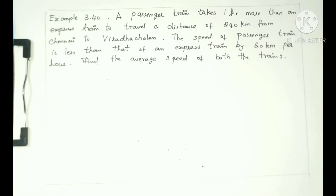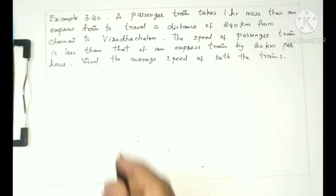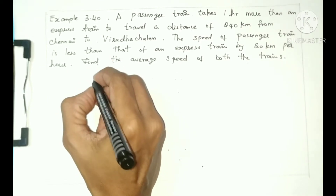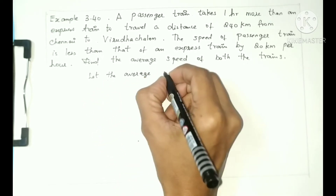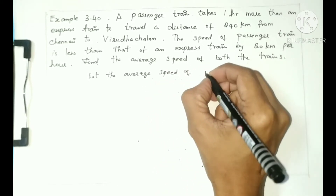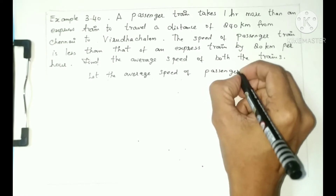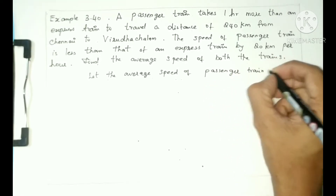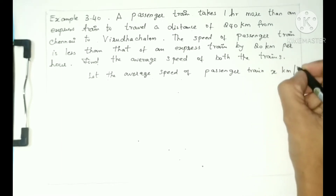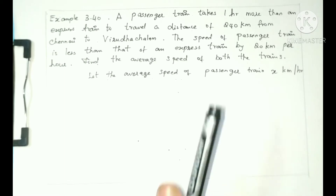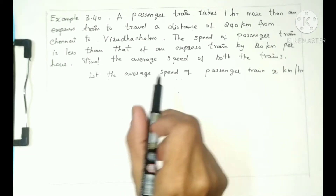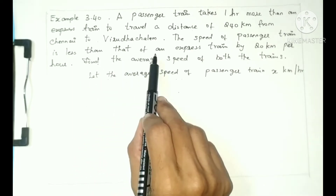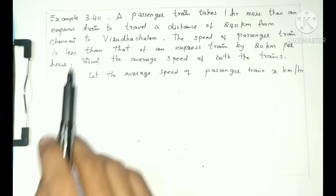First, let us take the average speed of the passenger train as x kilometers per hour. When compared to both the trains, the passenger train is less than that of the express train by 20 kilometers per hour.